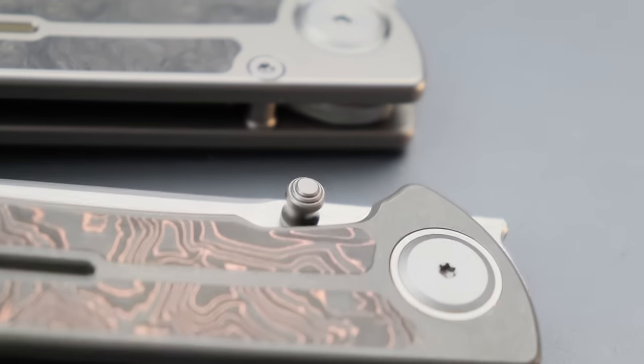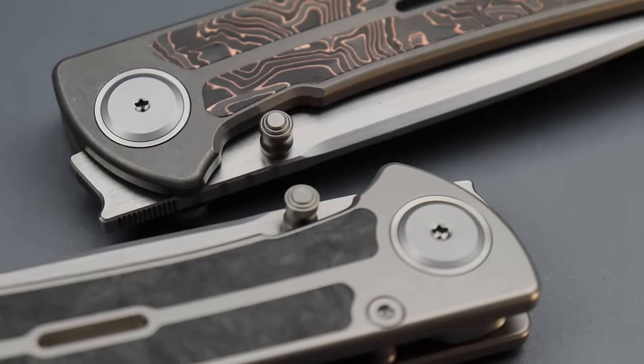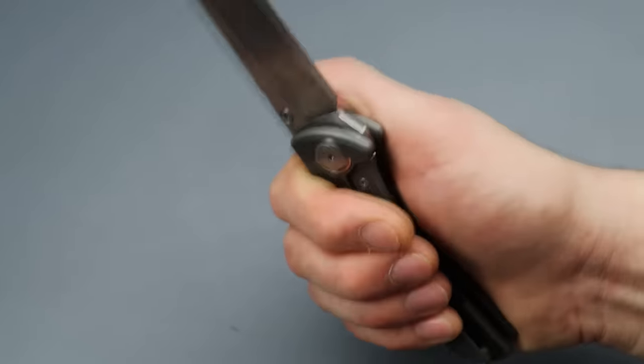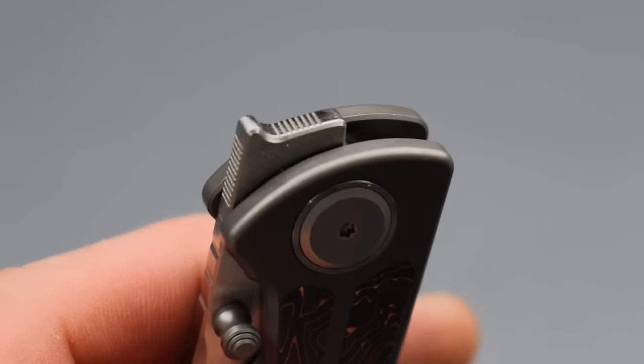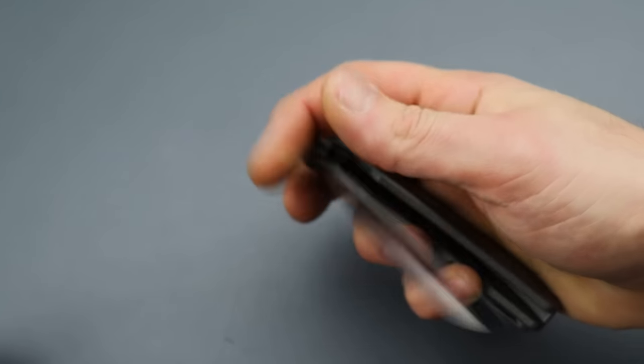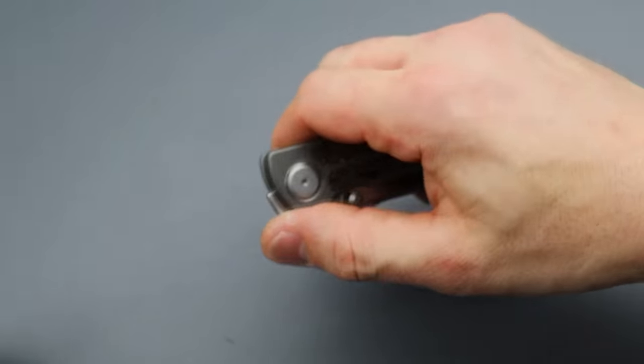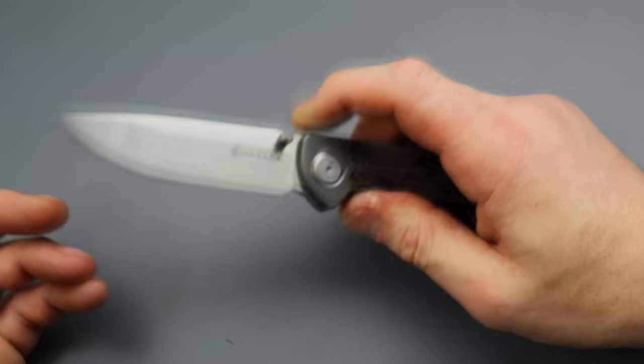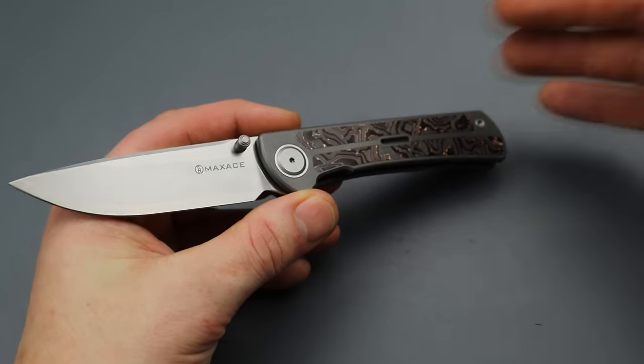Now the new one, the thumb studs are different, not that it really matters because the thumb studs were not bad on the original, but the new one is definitely good and it's still on washers. However the front flipper is definitely a hundred times better. The jimping actually works and it's much easier to front flip. Now I will be honest, because it's on washers it's not the best front flipping action. I would say that you probably should stay away from washers and front flippers combination. I would say just if you're going to do a front flipper, do it on bearings.